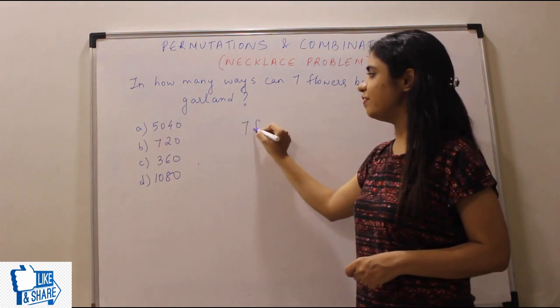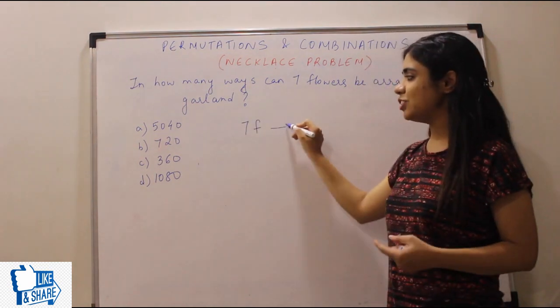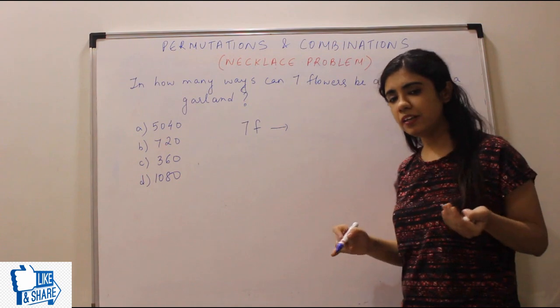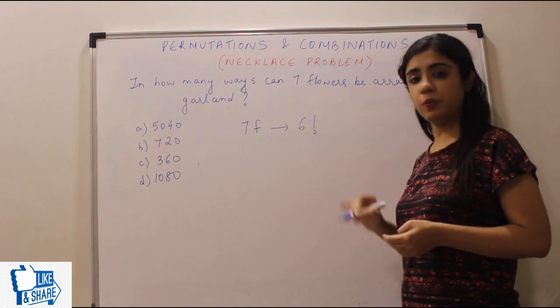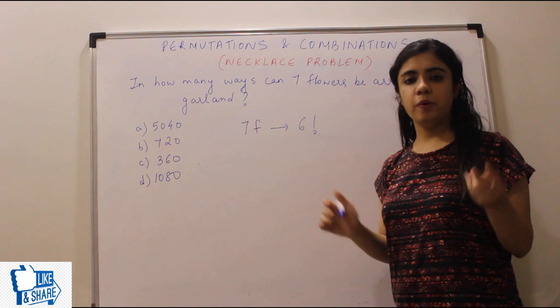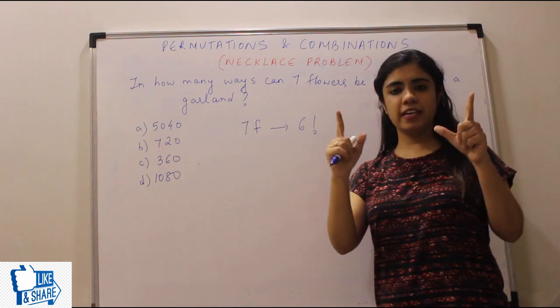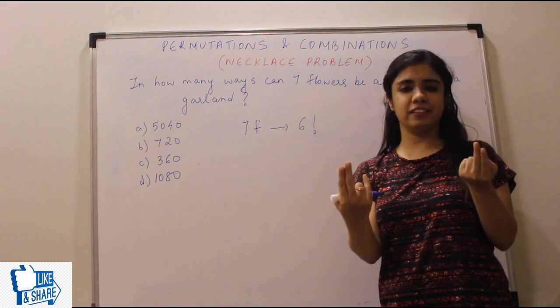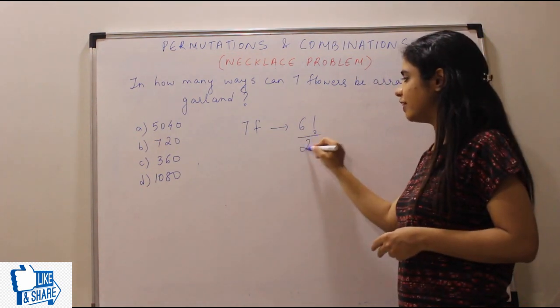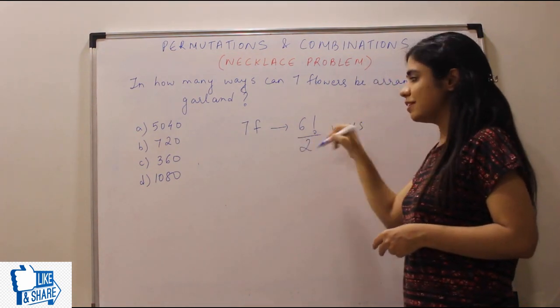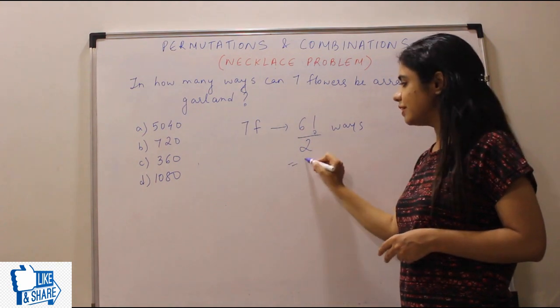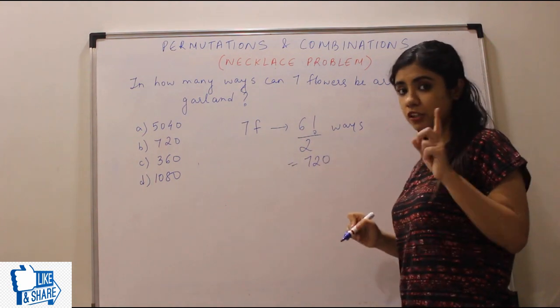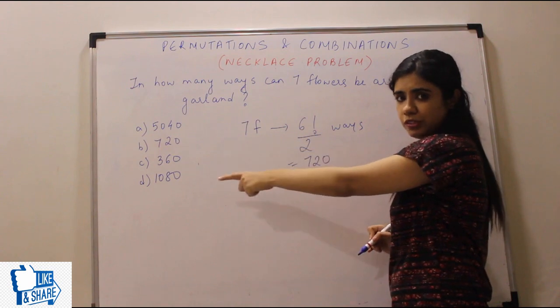Now understand seven flowers will be arranged in seven minus one which is six factorial. But we will have to divide it by two also. Because in a garland flowers are placed up and thorns down, or you can flip it. So we will have to divide it by two ways. Six factorial is 720.